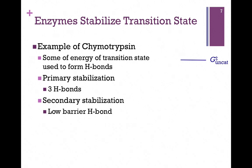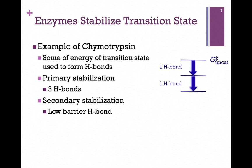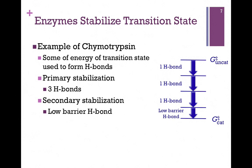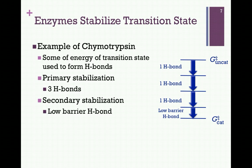Looking at the example of chymotrypsin, we start with the energy level for our uncatalyzed transition state. We have two sources of stabilization: the primary stabilization of those three hydrogen bonds and the secondary stabilization of the low barrier hydrogen bond. Starting at a very unstable high energy level, we use some of that energy to form the first hydrogen bond, reducing the energy of the transition state. We form another hydrogen bond and reduce it further, and then a third hydrogen bond. We've reduced our energy level considerably simply by forming those hydrogen bonds. And with the low barrier hydrogen bond, the Gibbs free energy of the catalyzed reaction transition state is much lower than it otherwise would be. This is a really good example of how enzymes stabilize the transition state.